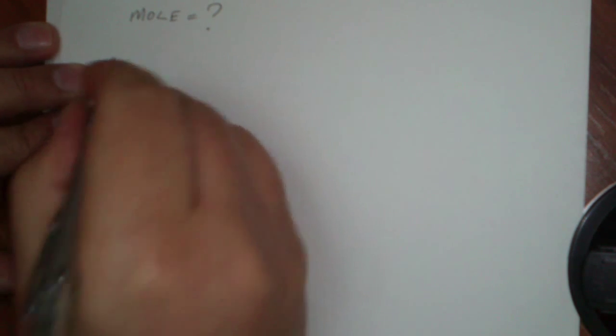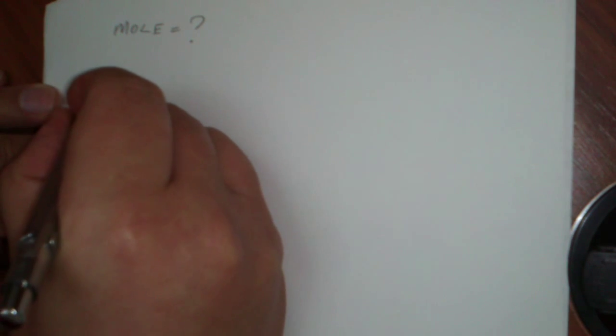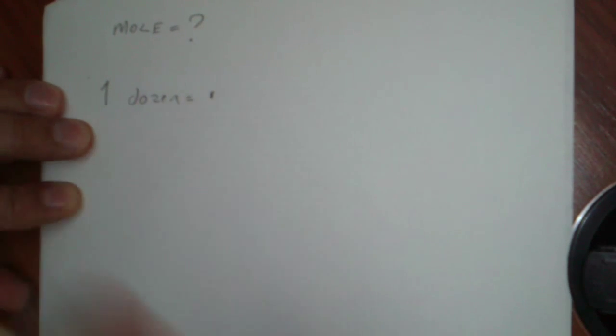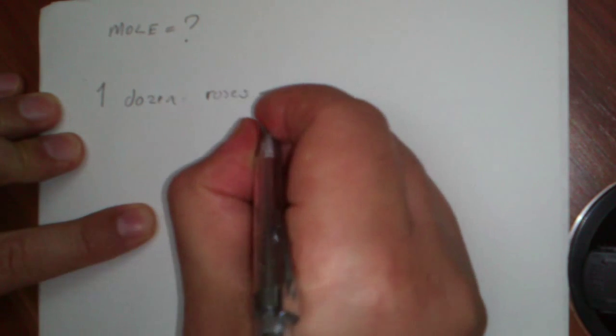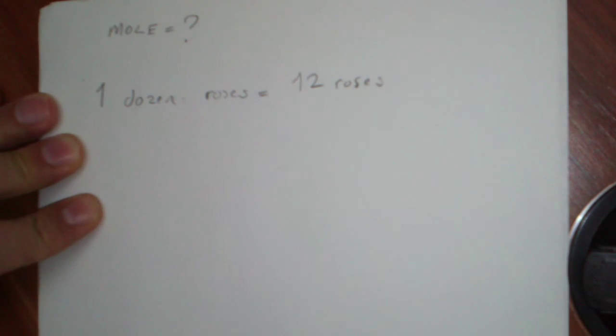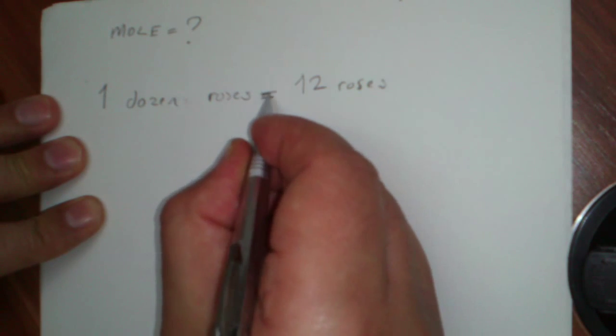For example, what do we say when we talk about roses? I made a surprise for my girlfriend with a dozen roses. When we say one dozen roses, we mean twelve roses, right? Twelve roses. They are equal. One dozen roses means twelve roses.